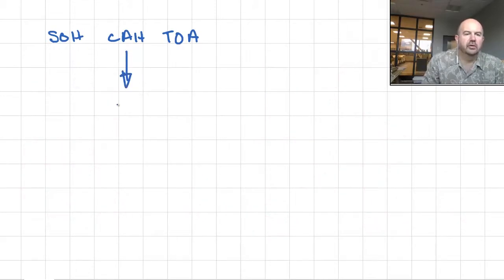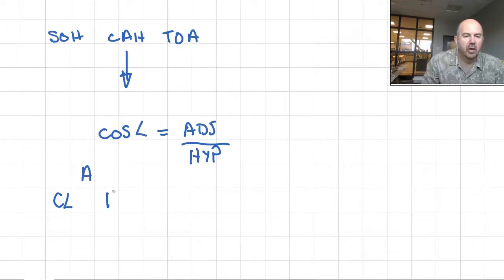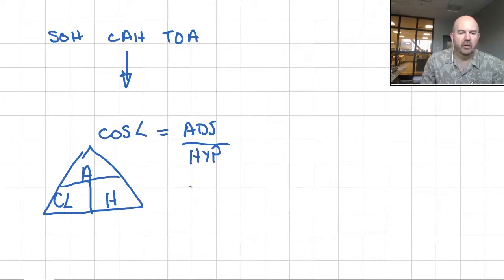What about the cosine function? The cosine of the angle is equal to the adjacent length divided by the hypotenuse length. Set it up like the little triangle from before: C-A-H — cosine, angle, adjacent, hypotenuse.